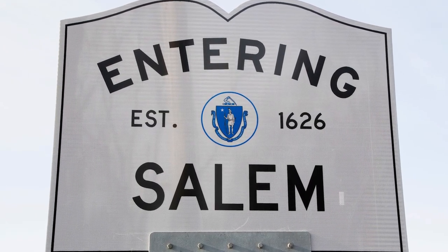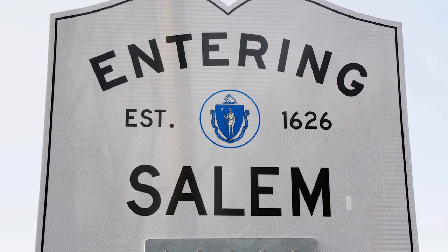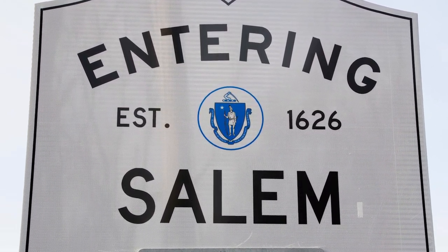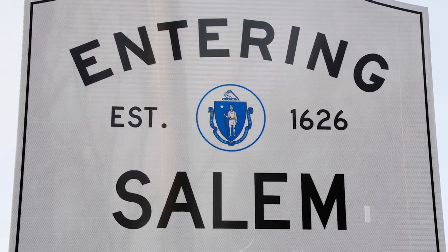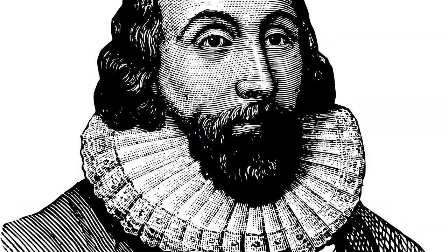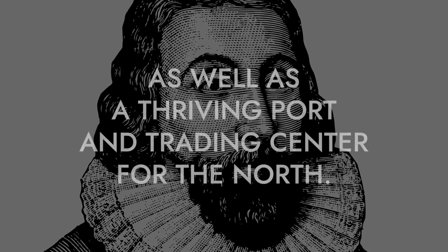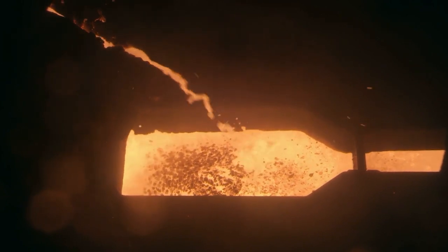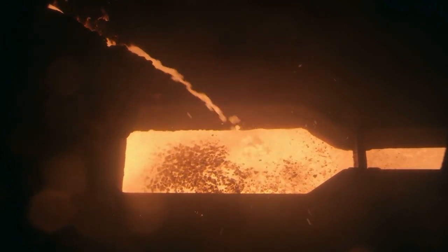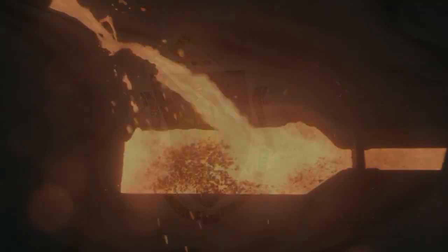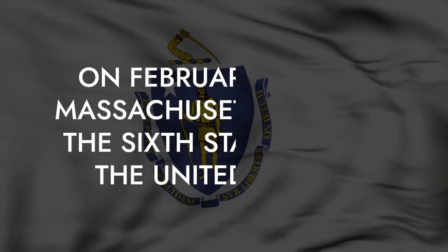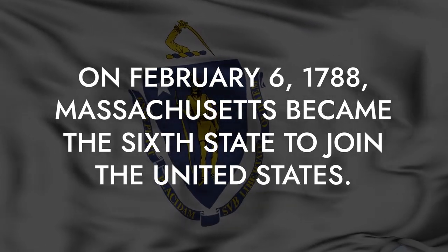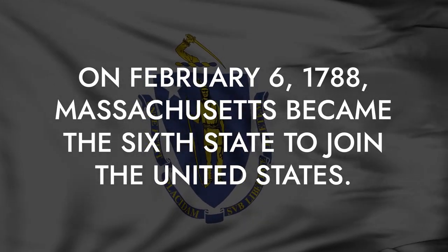In the beginning, Salem was a poor settlement. But, thanks to Governor John Winthrop, it didn't stay that way for long. He established a new town named Boston that became the capital of the colony, as well as a thriving port and trading center for the north. The colony grew and became successful from its production of iron and certain products made from iron. On February 6, 1788, Massachusetts became the sixth state to join the United States.